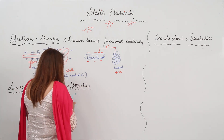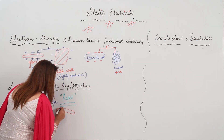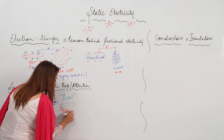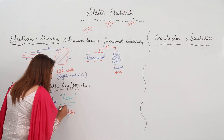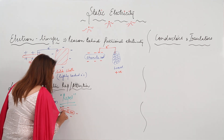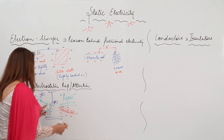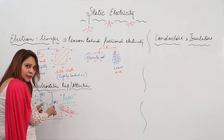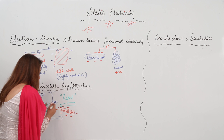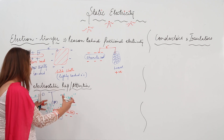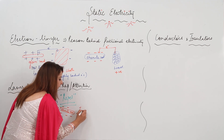Now I bring the ebonite rod — I have rubbed this ebonite rod with woolen cloth, so it acquires a negative charge. When I try to bring this ebonite rod towards the charged glass rod, I see that they start moving towards each other because they attract each other.